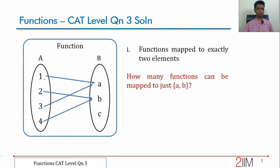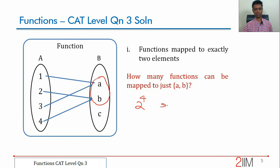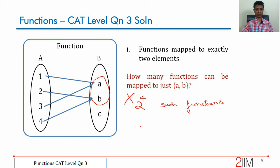Let us count functions mapped to only two elements. Take only a and b: each of 1, 2, 3, 4 has 2 options, giving 2 power 4 such functions. But wait — within those 2⁴, there is one mapping where everything goes to a and one where everything goes to b. Those are single-element mappings, not two-element. So the count is not 2 power 4 but 2 power 4 minus 2.